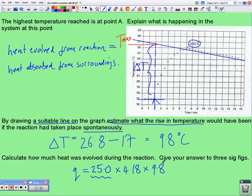So, I now have 25 multiplied by 4.18 multiplied by the temperature change, 9.8, gives me about 1024 joules.